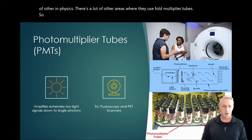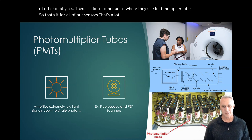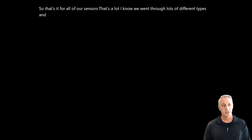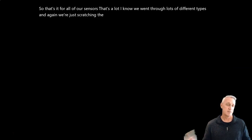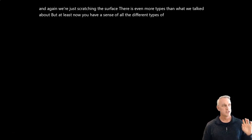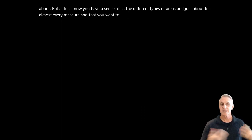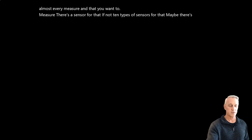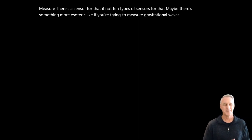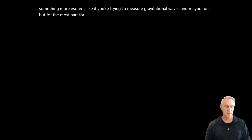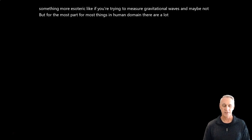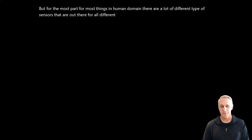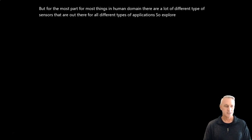That's it for all of our sensors — a lot of different types. We're just scratching the surface; there are even more types than what we talked about. But now you have a sense of all the different areas. For almost every measurand you want to measure, there's a sensor for that, if not ten types of sensors. Maybe something more esoteric like gravitational waves is an exception, but for most things in the human domain, there are many different types of sensors out there for all different types of applications. Explore that, and I'll see you next time.